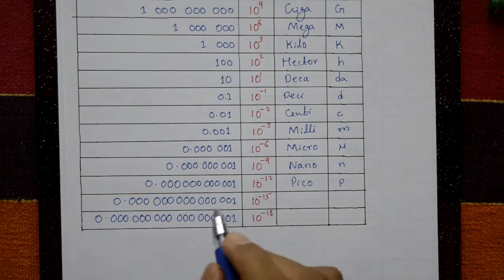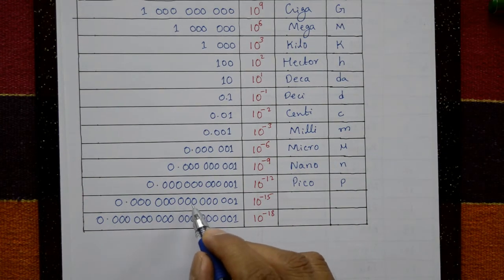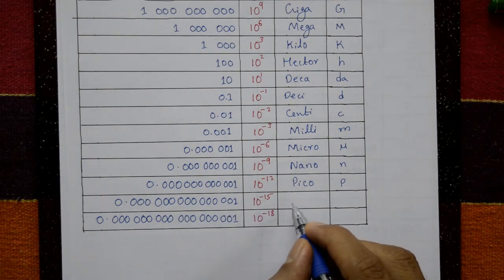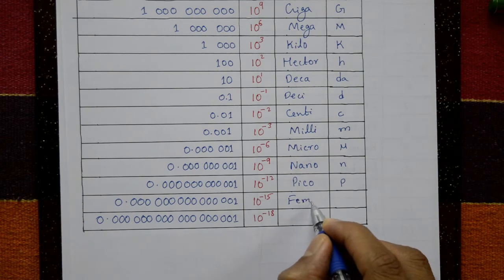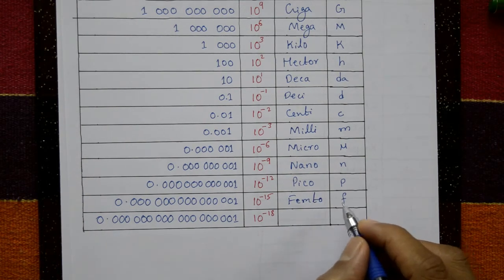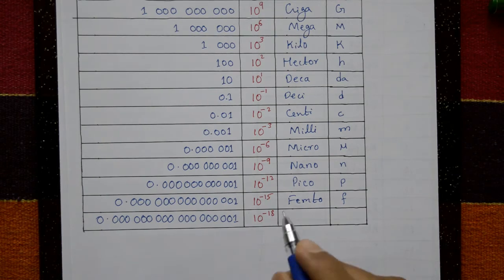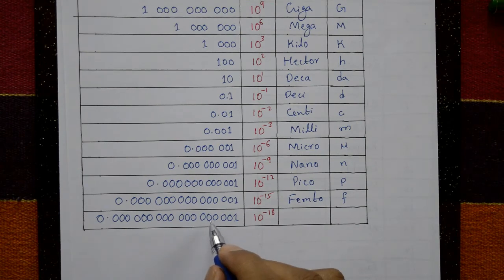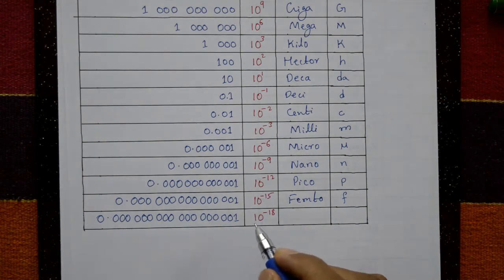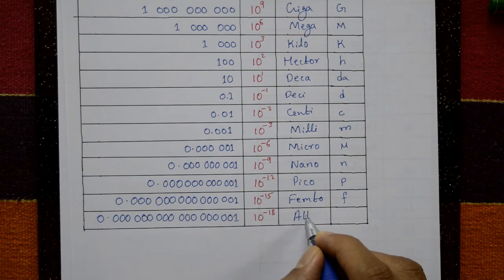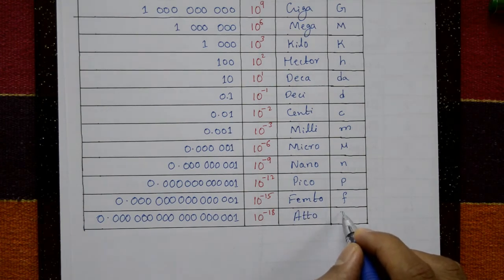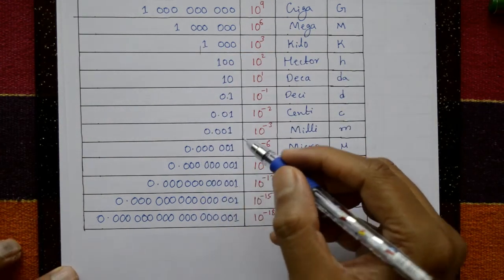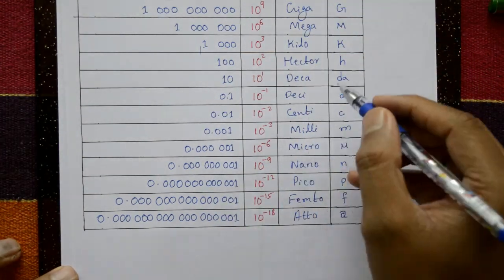10 to the minus 15 — 0.000000000000001 — is femto, and the symbol is f. The last one is 10 to the minus 18 — is atto, and the symbol is a. So these are the prefixes and multiplication factors along with their symbols.